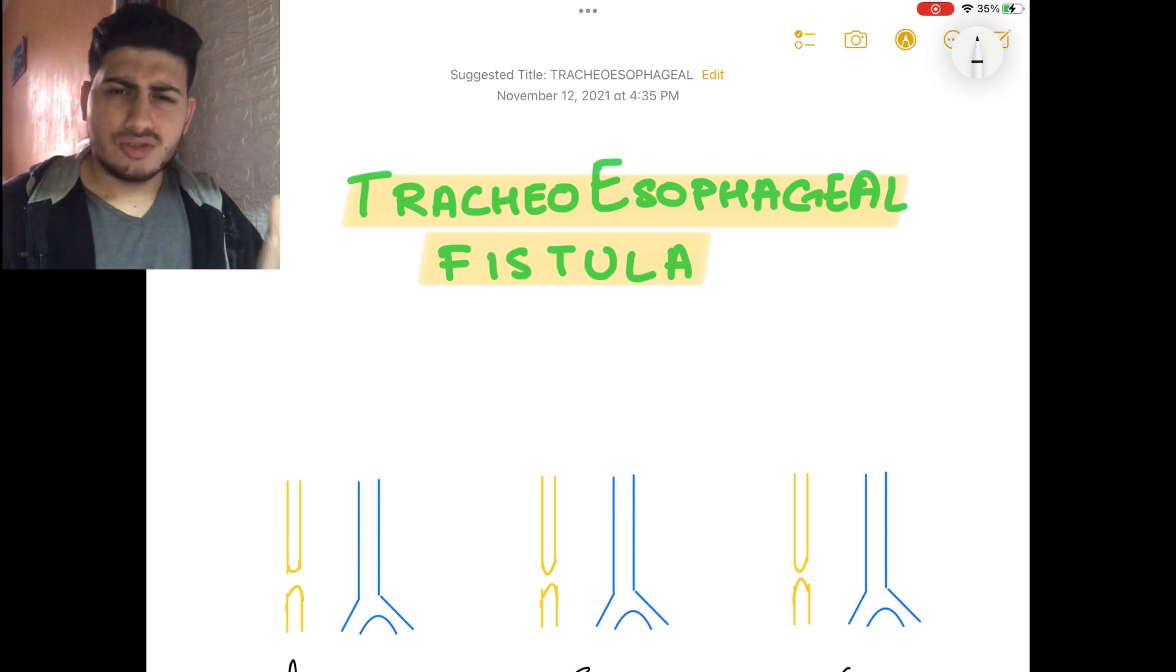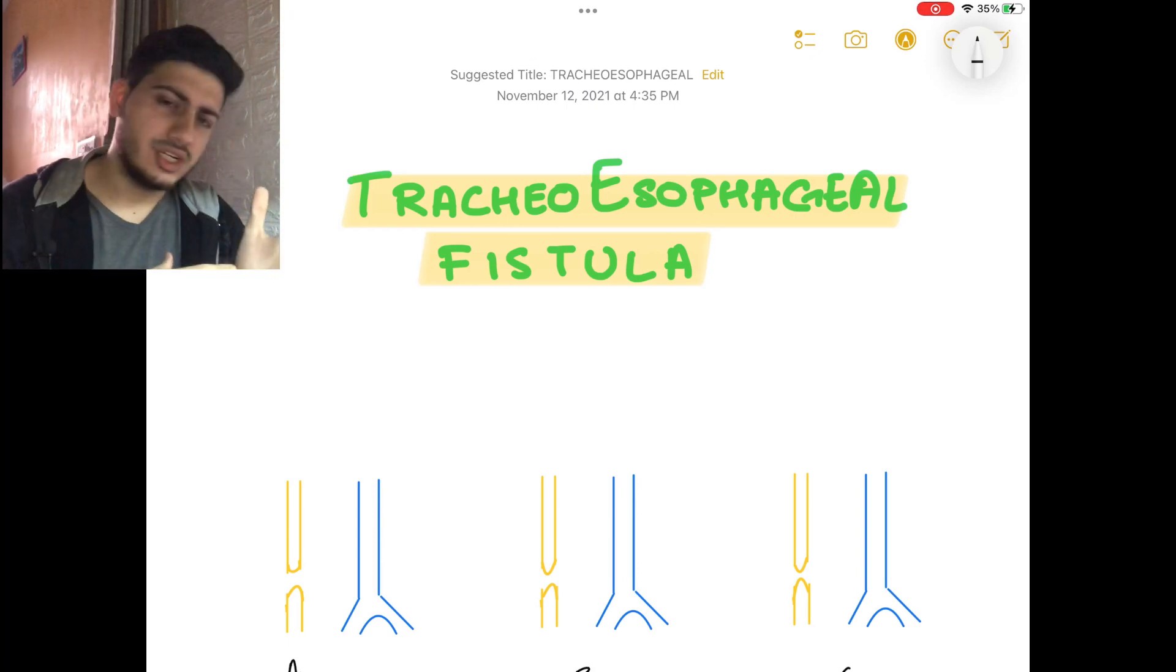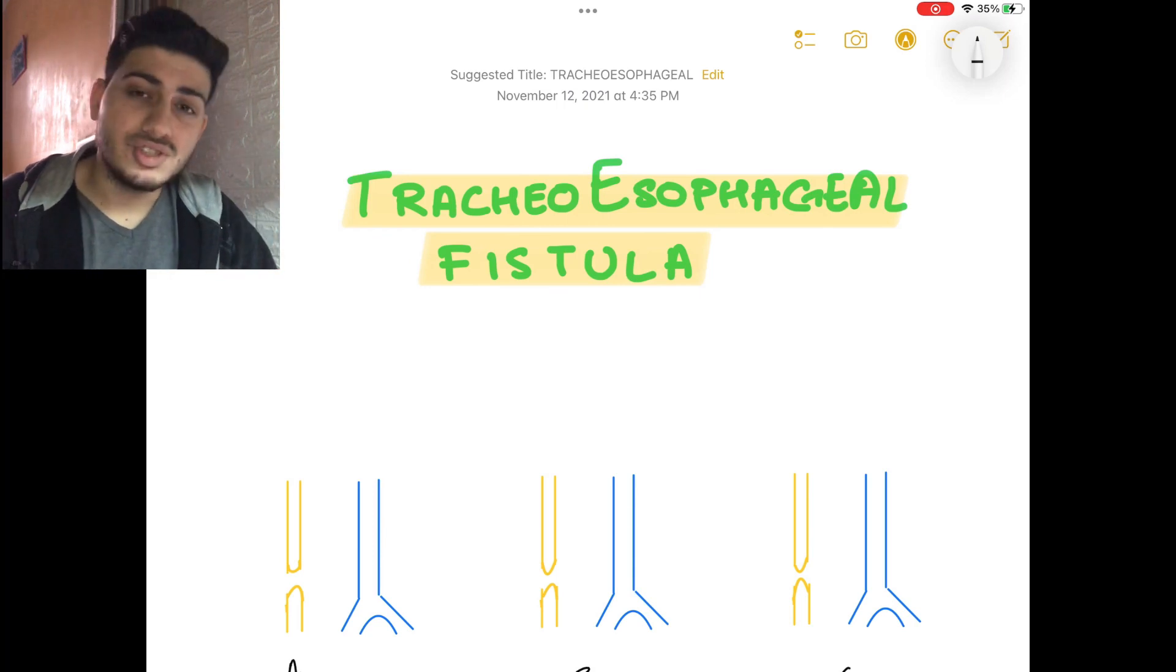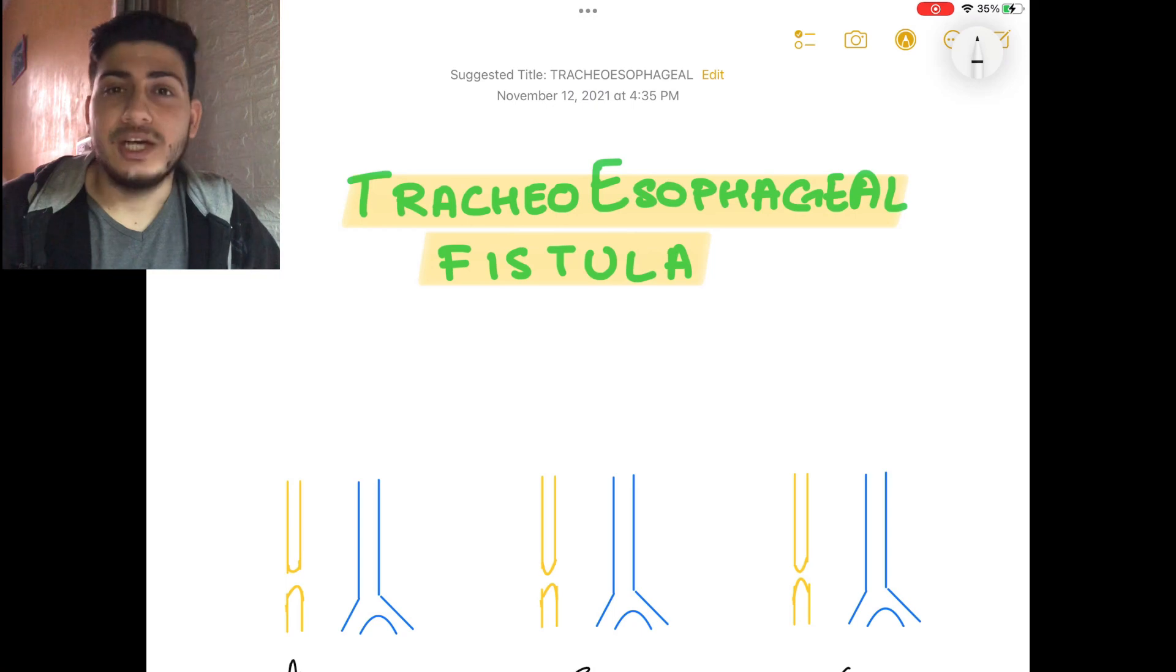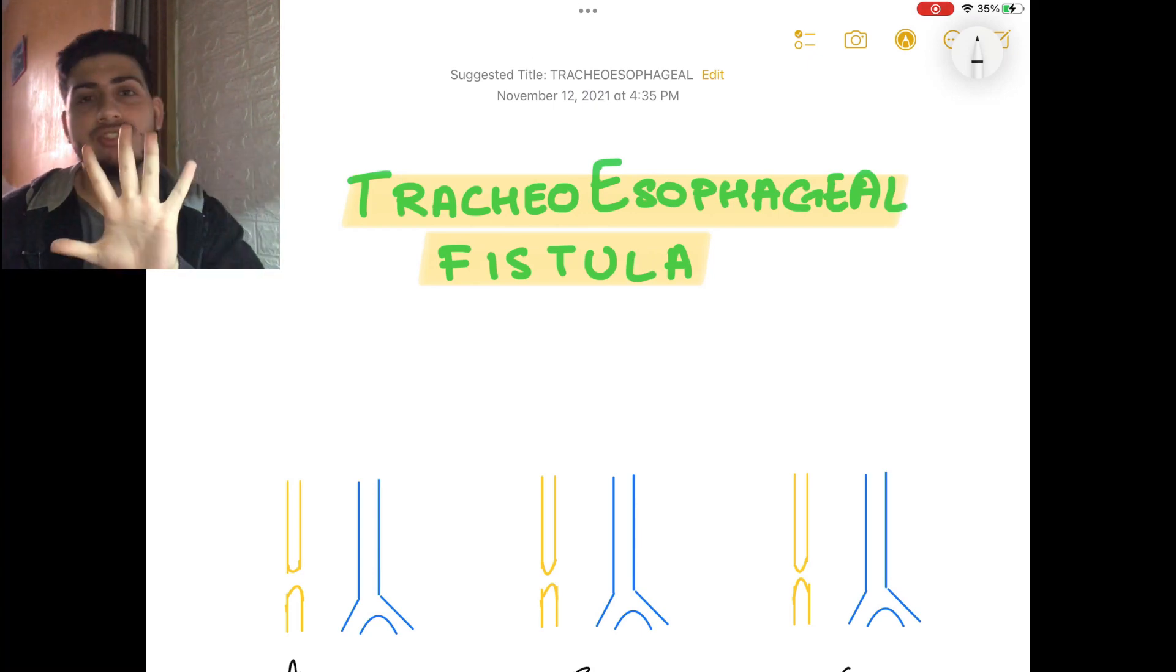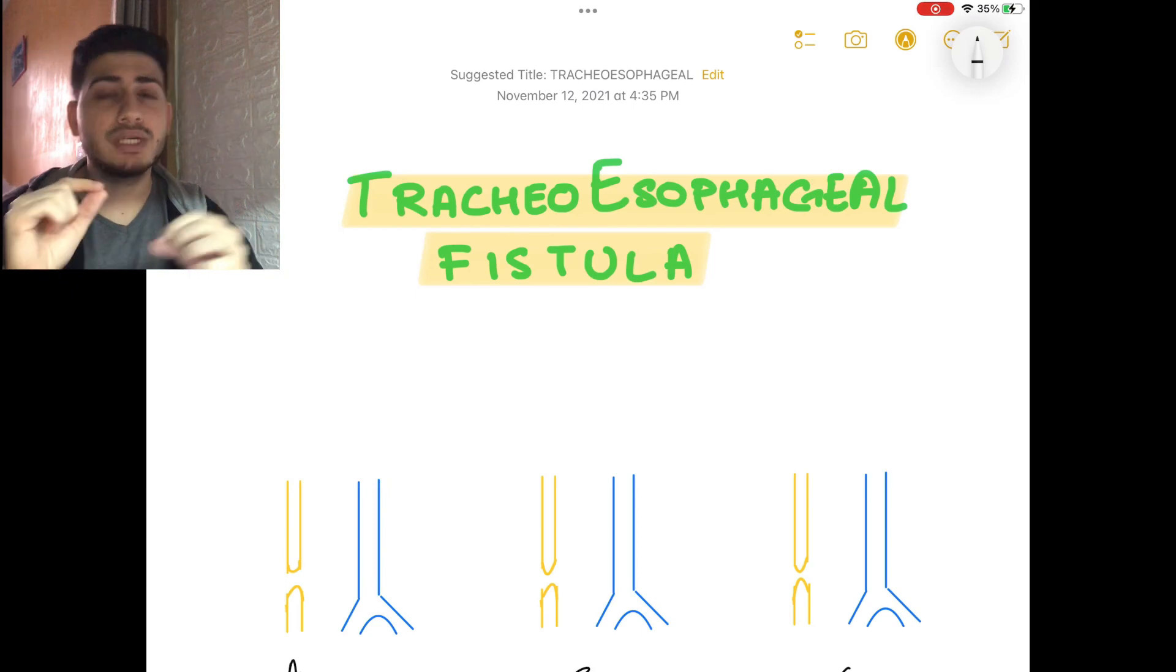I'll tell you a little bit about tracheoesophageal fistula. It's a connection between trachea and esophagus, and the most common type of TEF is Type C. I'll show you how it looks. I personally had a problem with that, so I'll tell you a mnemonic. Type A, B, C, D, E - five types. You'll remember when there's a connection.